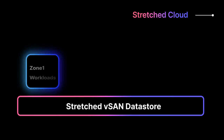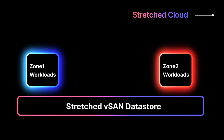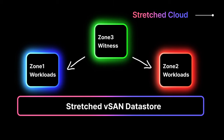A GCVE stretched private cloud is a private cloud that is stretched across two data zones and a witness zone, all within the same Google Cloud region. Stretched private clouds use vSphere and vSAN stretched clusters to provide compute and storage high availability against zone-level failures.